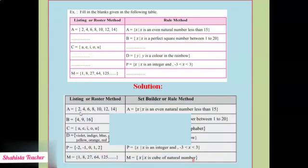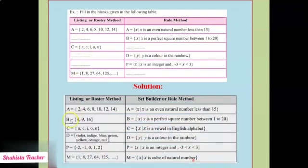Let's check our answer. Yes — B = {4, 9, 16}. Because 2 squared is 4, 3 squared is 9, 4 squared is 16. And 5 squared is 25, which is greater than 20, so we will not take it — because we have to take up to 20.